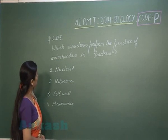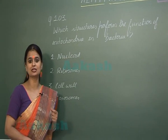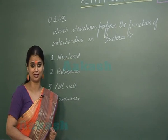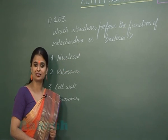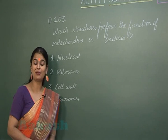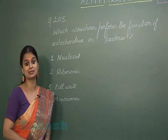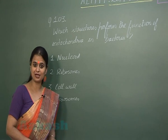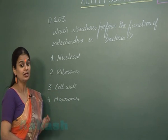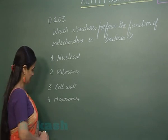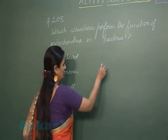Now question number 103 — which of the following structures performs the function of mitochondria in bacteria? Bacteria have a prokaryotic cell structure, so membrane-bound organelles including mitochondria are absent. The function of mitochondria is taken up by ingrowths of the membrane, which are known as mesosomes.